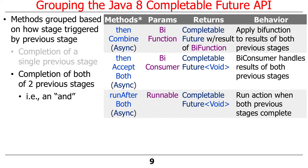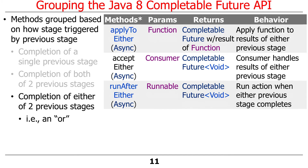As you might expect, in addition to 'and' methods, we also have 'or' methods. Or basically says there are two stages that happen before this one, and whichever one completes first, take the result of that and do something with it. The 'or' methods are applyToEither, acceptEither, and runAfterEither. We're going to take a look at acceptEither. These are kind of fun because you can use them to do some computation when either of two other asynchronous computations finishes.